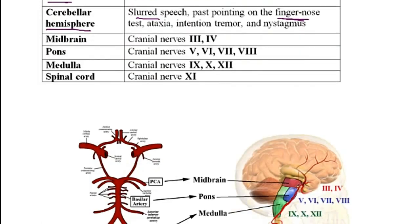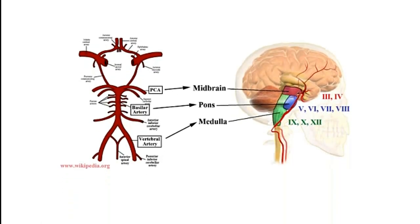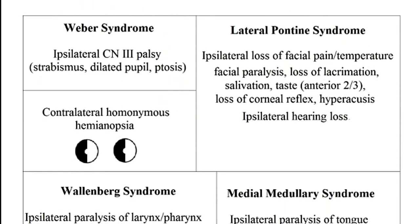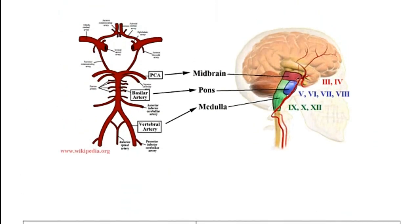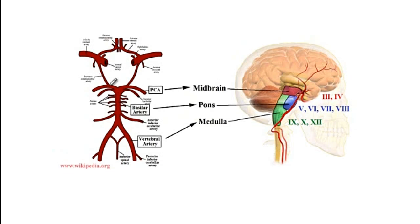The last topic is to go over lesions of the circle of Willis and discuss the symptoms that can arise from those. These lesions include Weber syndrome, lateral pontine syndrome, Wallenberg syndrome, and medial medullary syndrome. It may seem hard to memorize all associated symptoms, but if you understand which arteries supply which parts of the brain, it becomes easy to interpret those symptoms and identify the affected region.